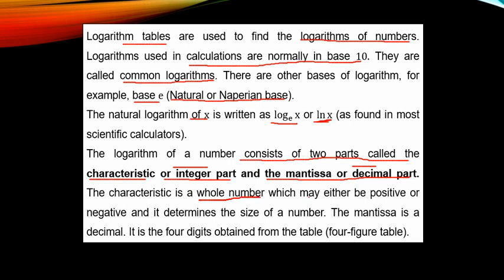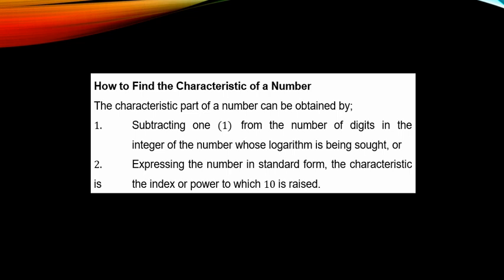The characteristic may either be positive or negative, and it determines the size of a number. The mantissa is the decimal part — it is the four digits obtained from the four-figure table. We are going to learn how to find these two parts that make up the logarithm of any number.